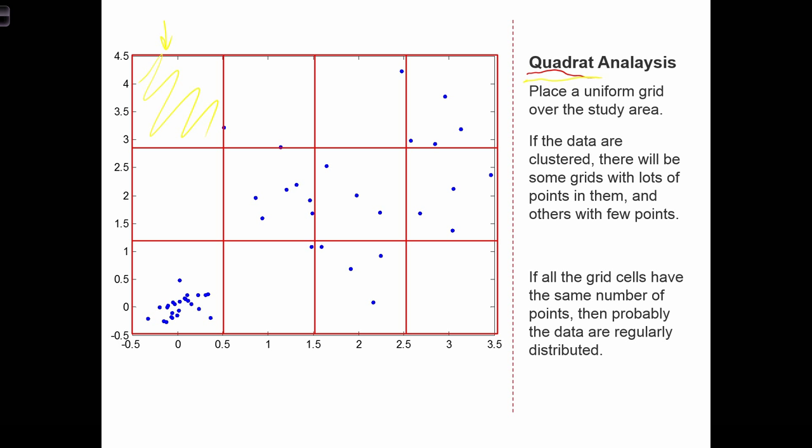Now, let's think about how many points fall in each of these quadrats. When the data are clustered, we're going to find that some of the quadrats have a lot of points in them, and some are going to have very few points.